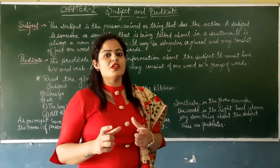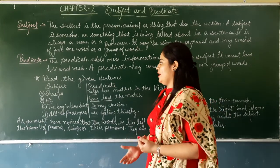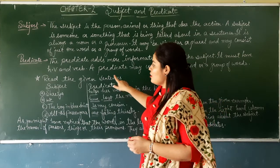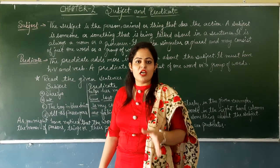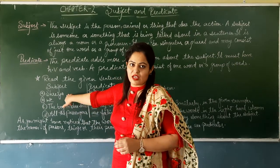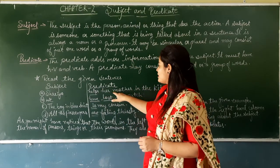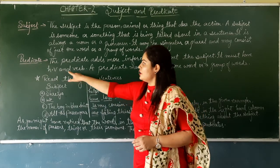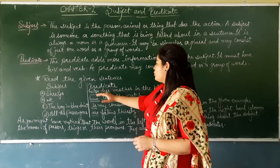Ab hum sentences ko padhenge aur samjhenge ki subject aur predicate kya hota hai. First, we have written 'Subject' on one side and 'Predicate' on the other. First example — Shreya. Shreya yahan par kya hai? Noun hai. To jo subject hota hai uske andar noun aur pronoun dono hi hote hain. Shreya kya hai — sangyya, noun hai. Iske liye jo predicate hai: 'helps her mother in the kitchen.' Humein kaise pata chalega yeh predicate hai? Kyunki predicate mein helping verb ya verb hota hai — yahan 'helps' kya hai? Verb. To yeh hamara subject ho gaya aur yeh hamara predicate ho gaya.